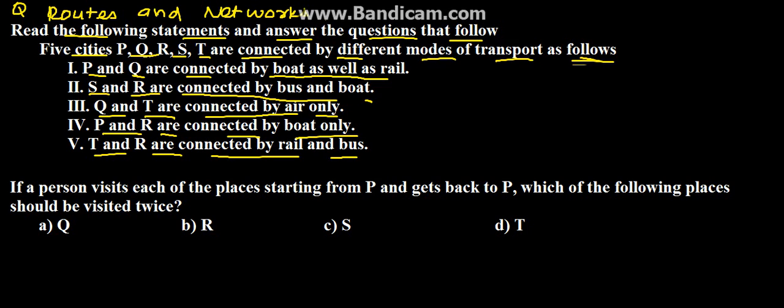Hello everyone. So here we are on routes and network and we have been given read the following statements and answer the questions that follows. Five cities P, Q, R, S, T are connected with different modes of transport.